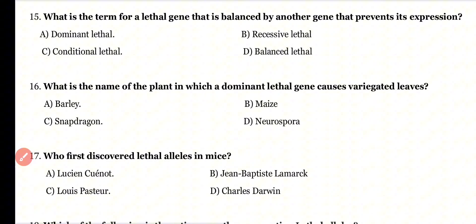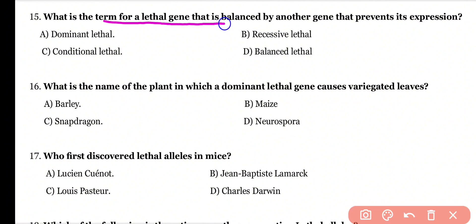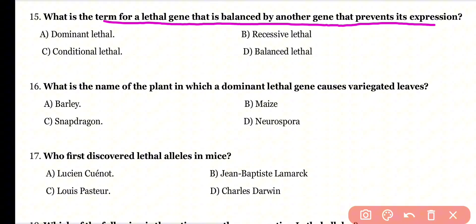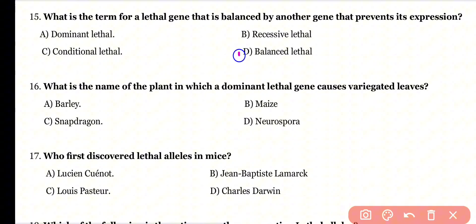Question 15: What is the term for a lethal gene that is balanced by another gene that prevents its expression? Options: dominant lethal, recessive lethal, conditional lethal, or balanced lethal? Correct answer is option D — balanced lethal.